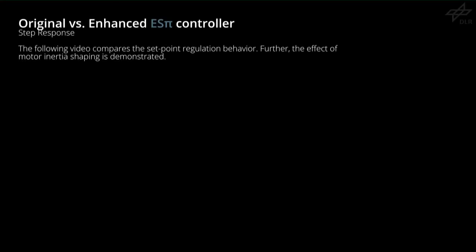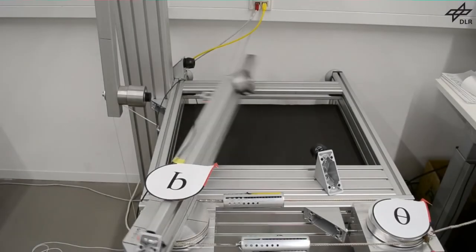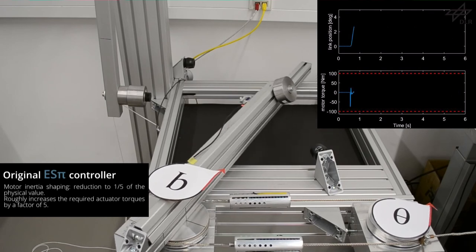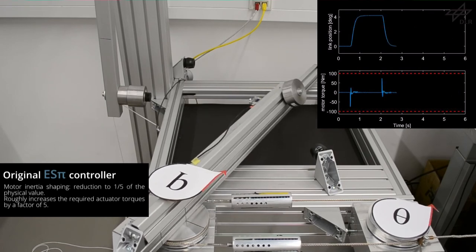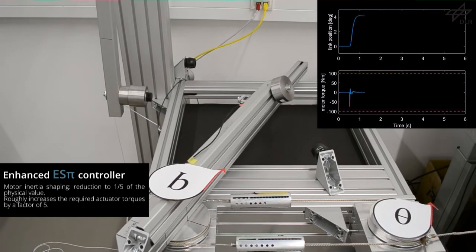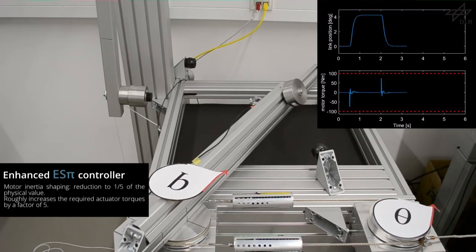This scene shows the natural oscillatory behavior of the testbed. The following experiment compares the set point regulation behavior of the two implementations shown at the beginning. Further, the effect of motor inertia shaping is demonstrated. As we can see, the dynamic extension implementation allows for a well-damped set point regulation behavior, with a performance comparable to the classic PD implementation.